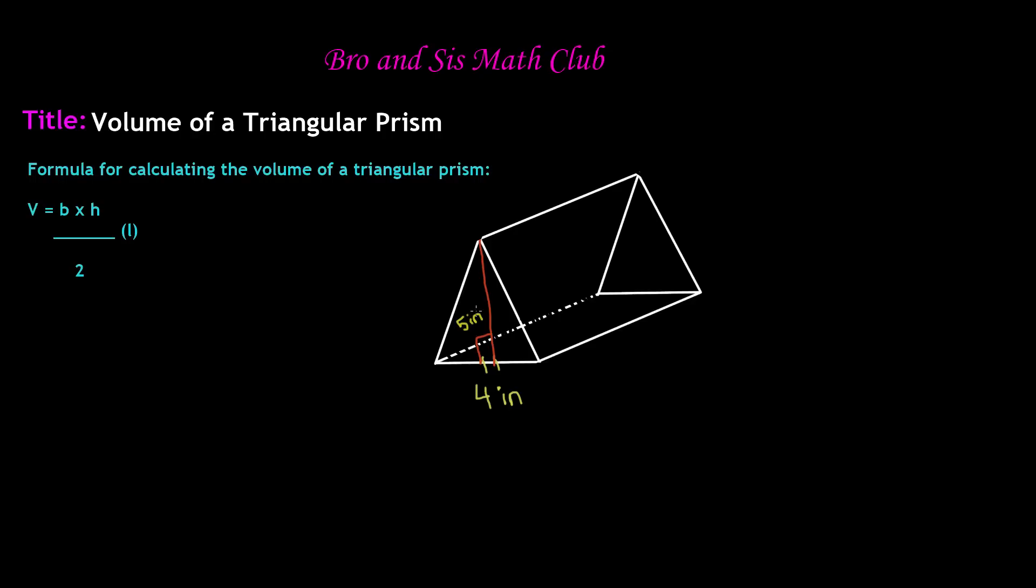We have our base and height, and now we need the length. Let's say the length is 9 inches. Now let's plug it into our formula: V = (5 × 4) / 2 × 9. Five times four is 20, divided by 2 equals 10 inches. Then multiplied by 9 inches, we get volume equals 90 inches.